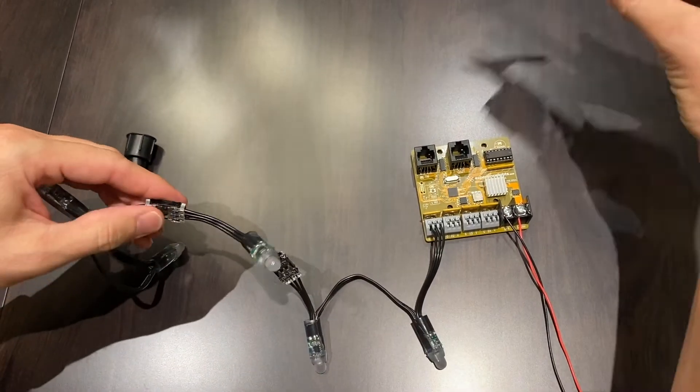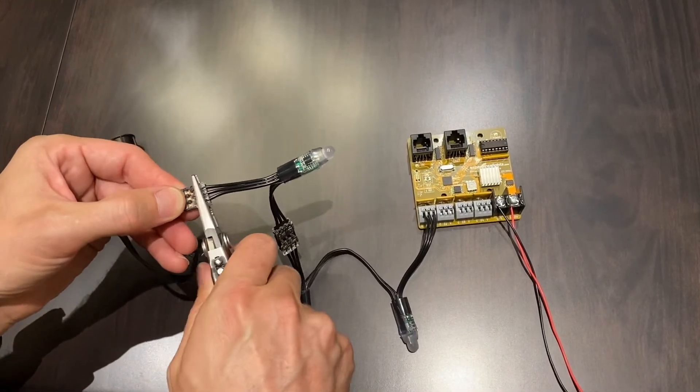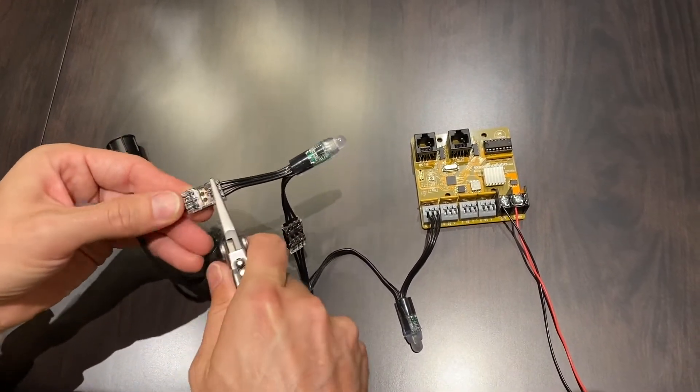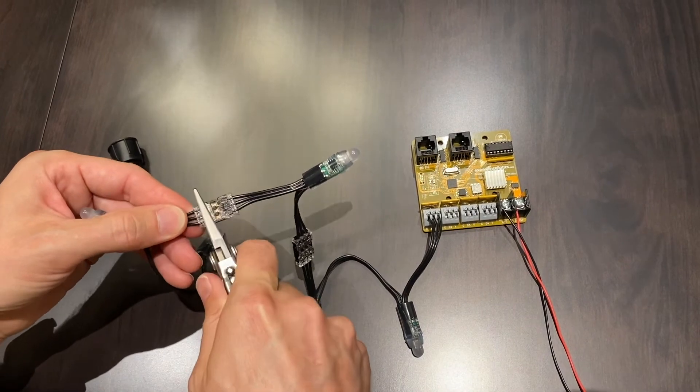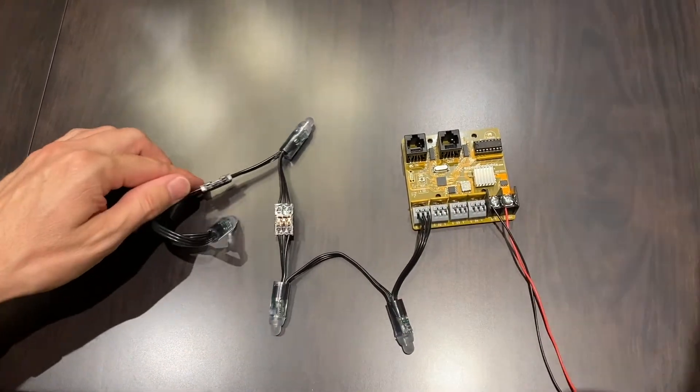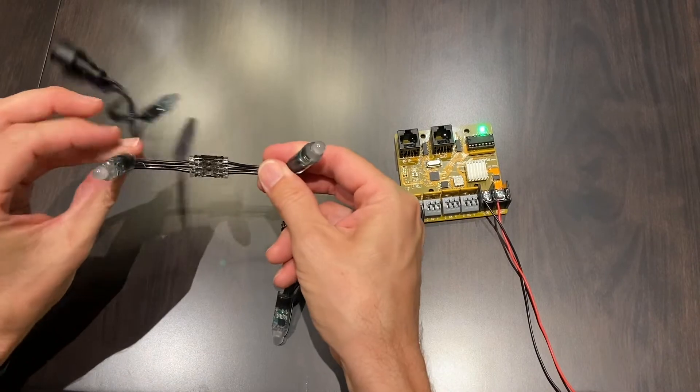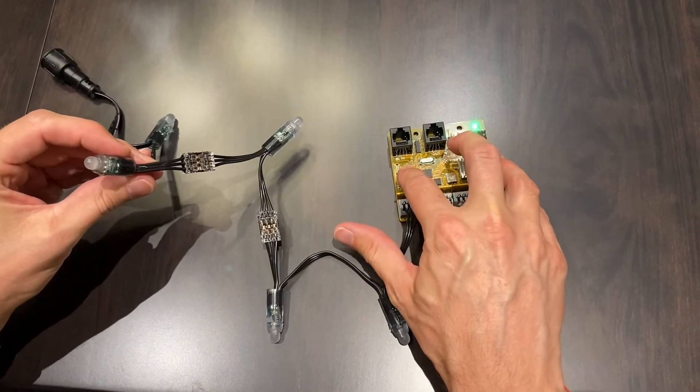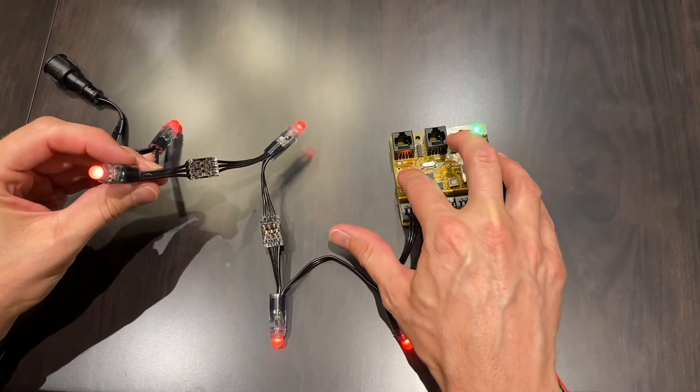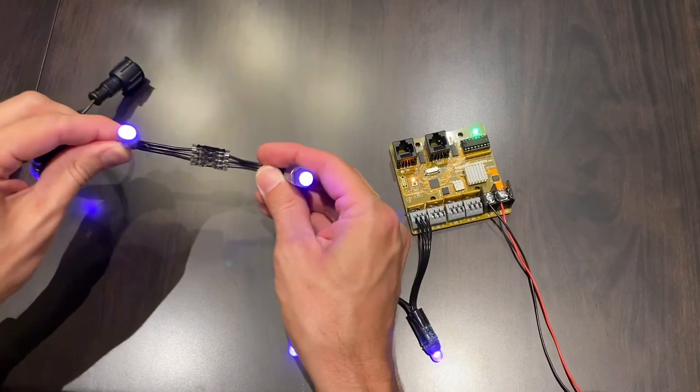And then we're going to crimp it down with our pliers here. So just a quick little crimp like that. Turn our power back on, take a look there, put it into test mode, and that's as simple as it is.